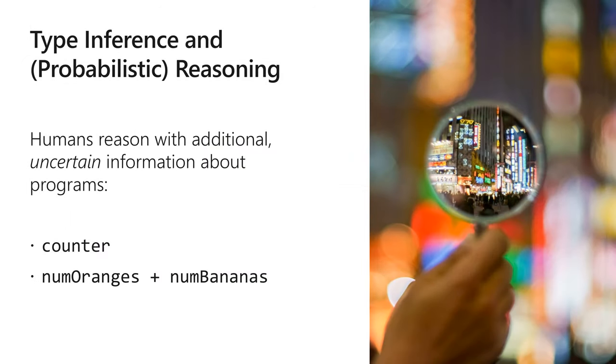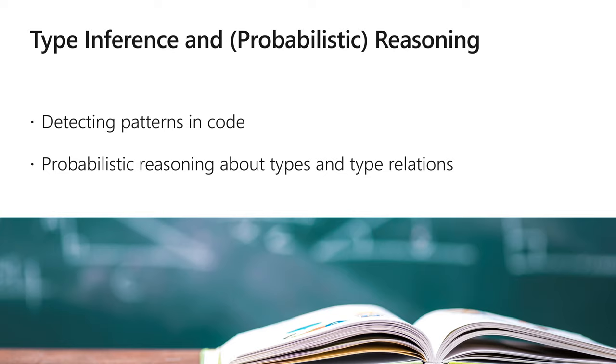When humans reason about a program, they use uncertain information about that program. For example, if they see a variable named counter, they realize that this is a non-negative integer without even seeing a type annotation. Or when they see num_oranges to be added to num_bananas, they realize that these two things are integers, but they're probably not compatible. So the goal of our research is to use machine learning to learn and detect patterns in the code that will allow us to probabilistically reason about types and type relations.